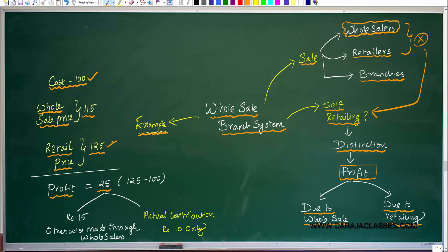What we have to understand here is that the actual performance or actual profit of the branch is not 25. The reason is that 15 out of this 25 otherwise could have been made through wholesalers, because the same product, if sold through a wholesaler, could have been sold for 115, giving a profit of 15. So when you say your profit is 25, that 15 already could have been made through wholesalers.